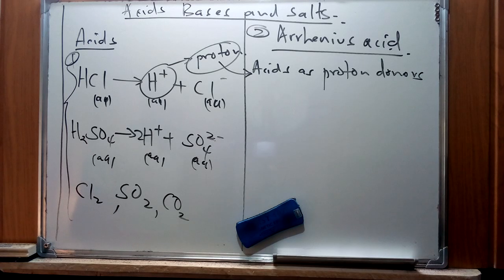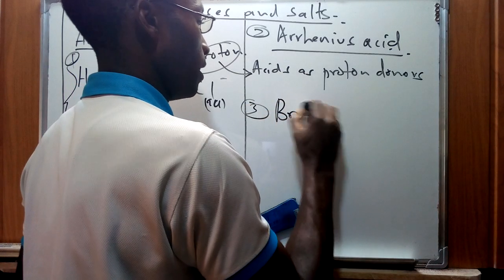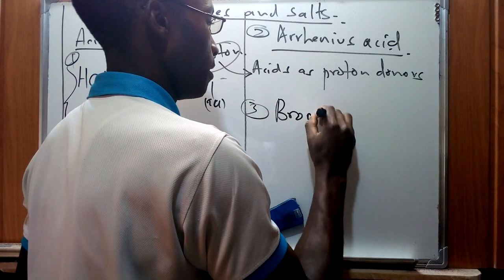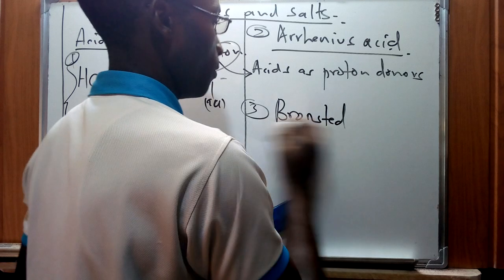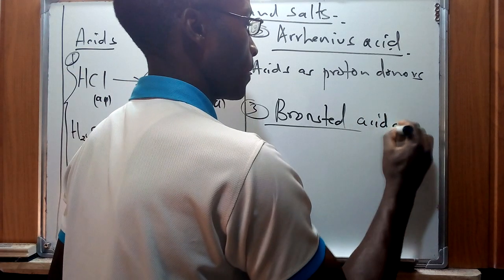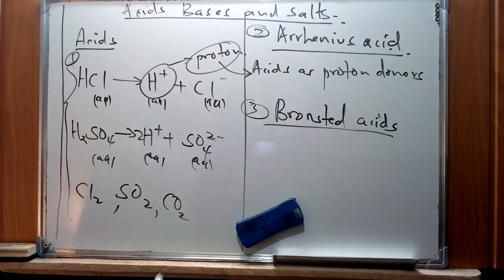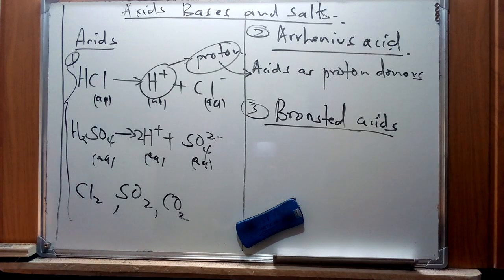The third definition is the Brønsted definition of an acid. For the Brønsted definition, we refer to these as Brønsted acids. The Brønsted definition is a more general definition of an acid, whereby Brønsted defines the acid as a proton donor.